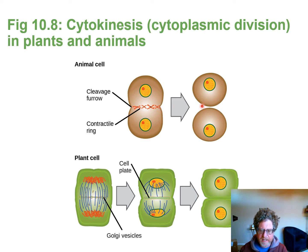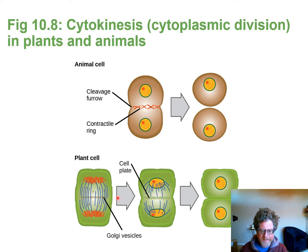During cytokinesis, organelles such as mitochondria and ER are split between the two cells. In plant cells, because they have a cell wall, a flat cell plate forms between the two cells instead of a cleavage furrow, and they split that way.